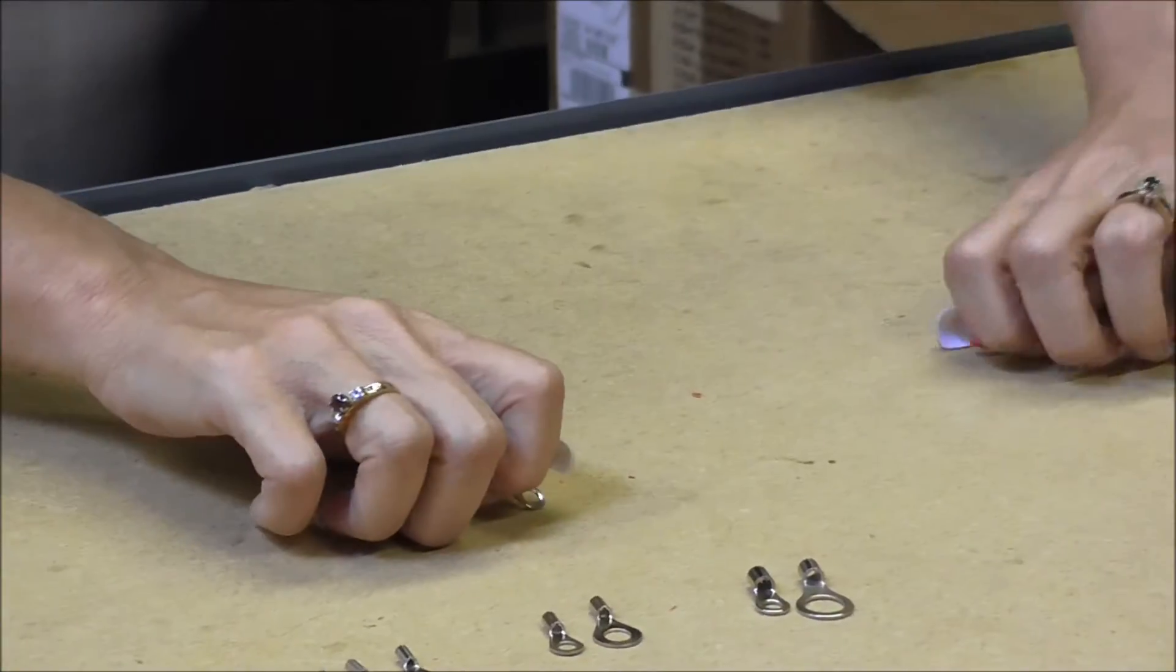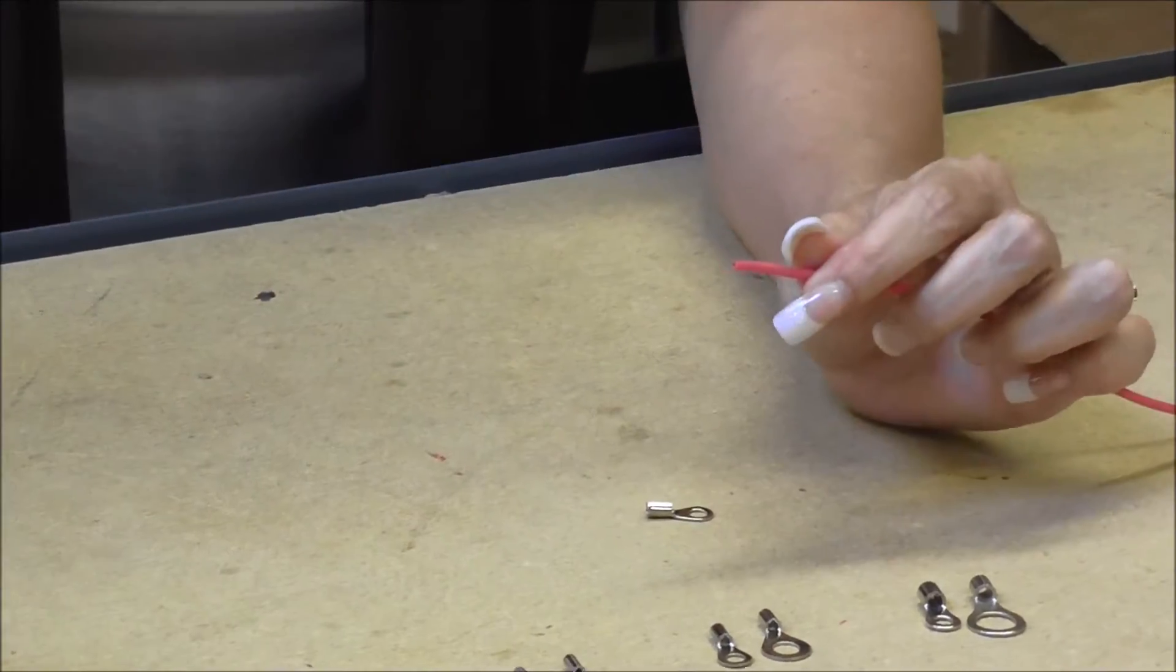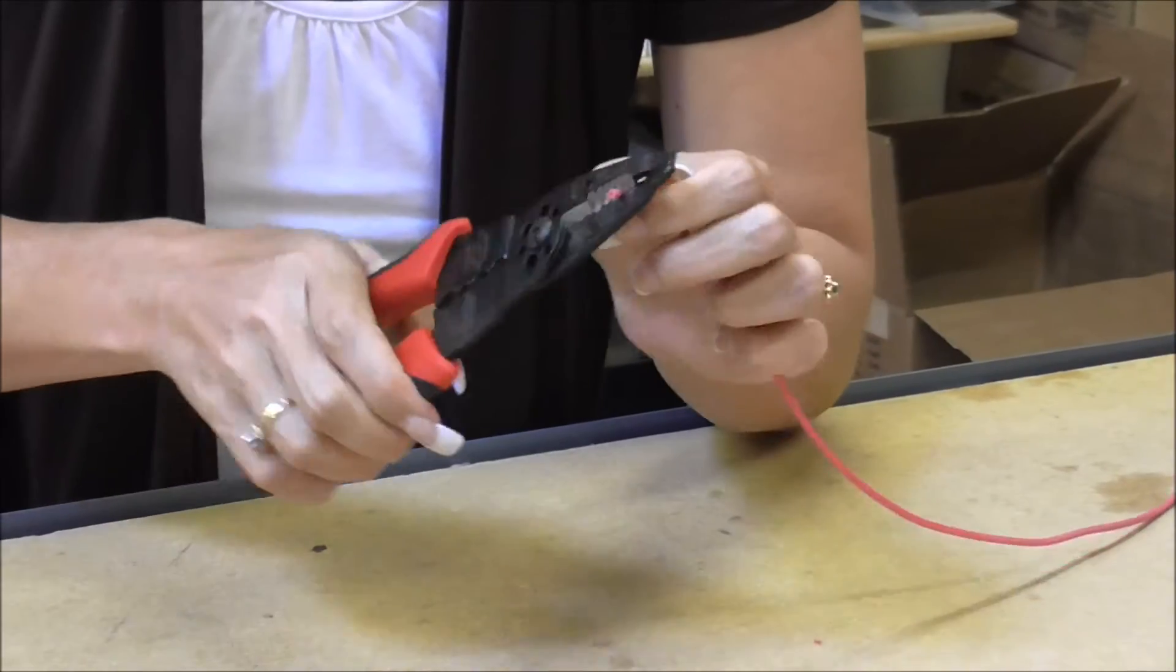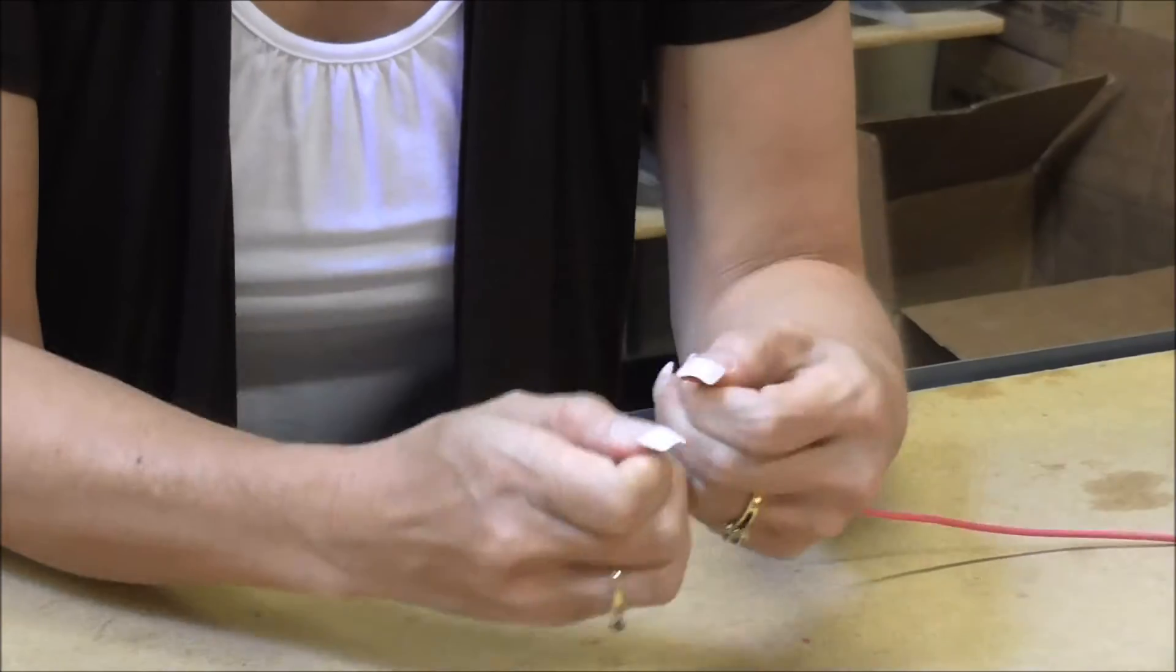We are going to take our 18 gauge wire and we are going to strip off about an eighth of an inch, maybe a quarter of an inch.